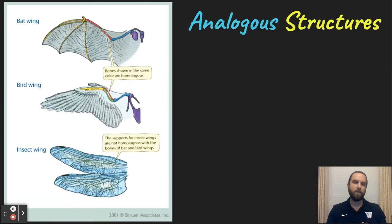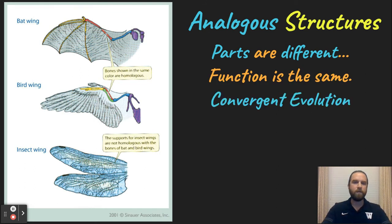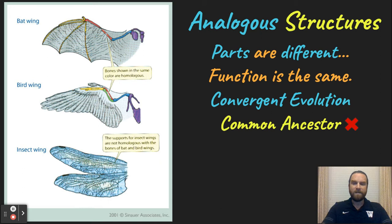On the other side of the coin, we have analogous structures, where you have three different types of wings. The parts all look very different, but the function is the same. This is a great example of convergent evolution, where different organisms evolved structures to do the same function — in this case, flight. This is not an example of a common ancestor, like homologous structures are.